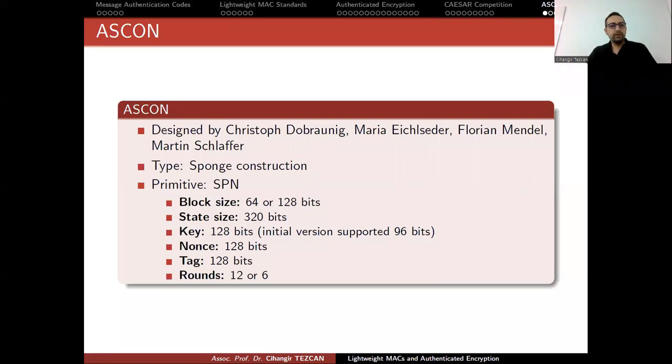One of the winners of the Caesar competition was ASCON, designed by Christoph Dobraunig, Maria Eichsleder, Florian Mendel, and Martin Schlaffer. It is a sponge construction.